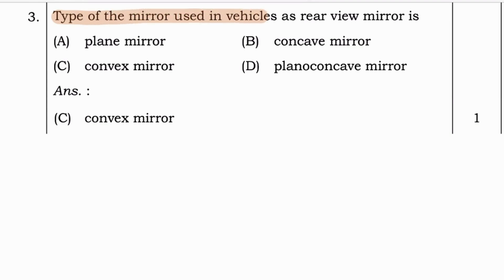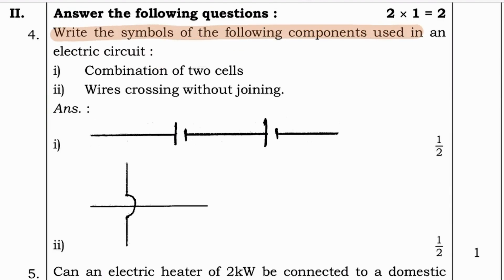Next question. Type of the mirror used in vehicles as rear view mirror is plane mirror, concave mirror, convex mirror, or plano concave mirror. Answer for this question is option C, convex mirror.